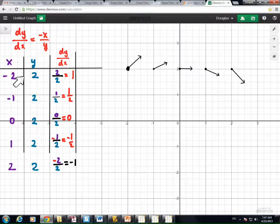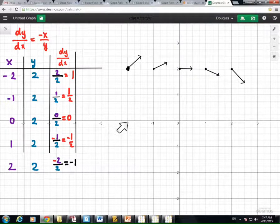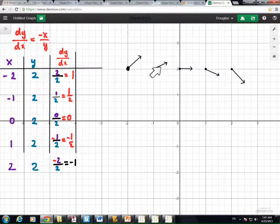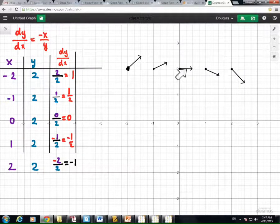And so at negative 2, 2, the solution to the differential equation is going to be increasing at a slope of 1. So I just draw a little vector whose slope is 1. At the point negative 1, 2, I find a slope of 1 half. So I find the point negative 1, 2, and I draw a little vector whose slope is 1 half. We have a slope of a tangent at 0 at the point 0, 2, and negative 1 half, and negative 1.